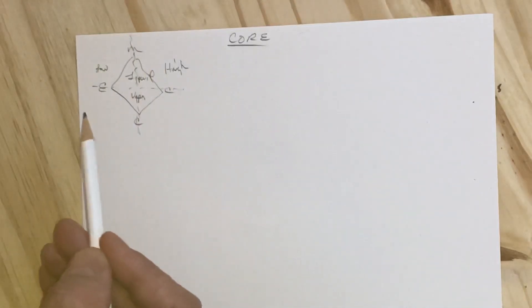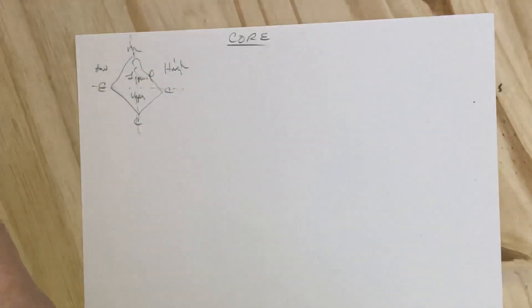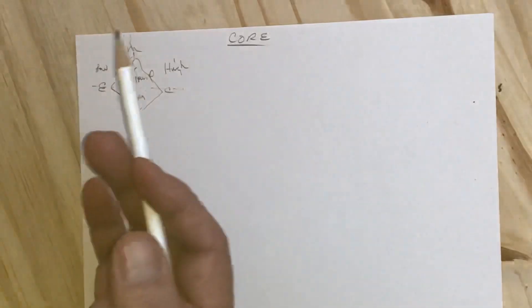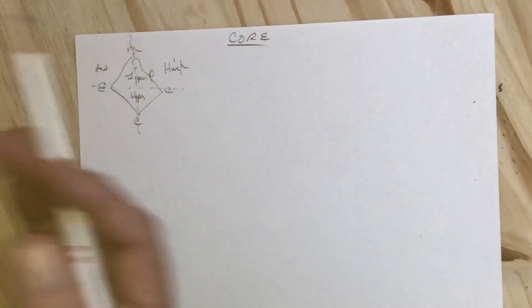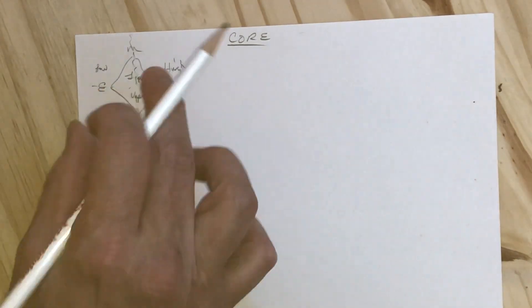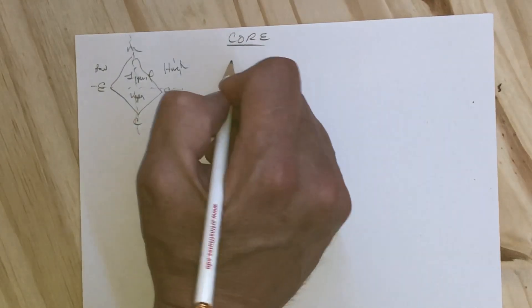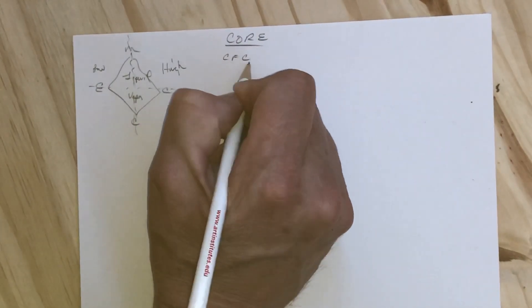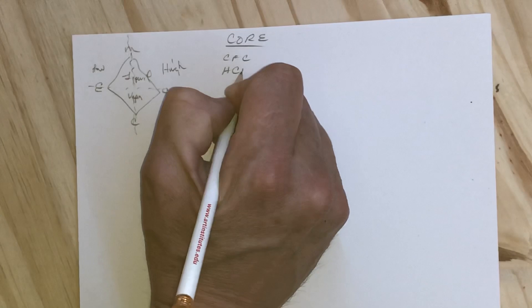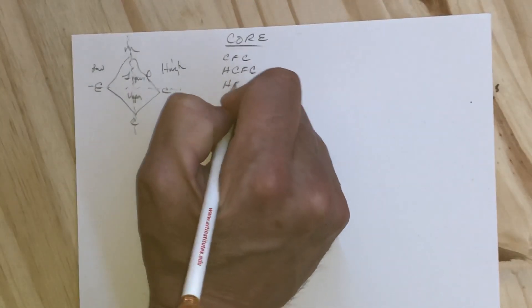You can use this to answer questions about the condenser above the receiver, or if the evaporator and metering device are on the first floor and you're drawing refrigerant from a condensing unit on a roof. The other thing you should know is the hierarchy of refrigerants: CFCs, HCFCs, HFCs, HCs, and HFOs.